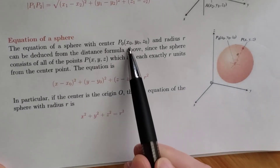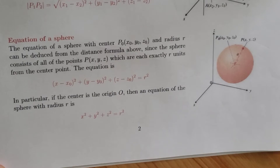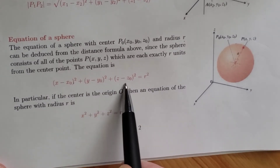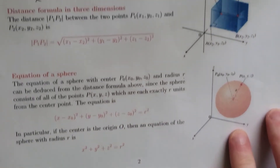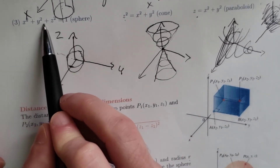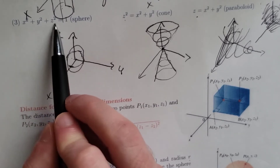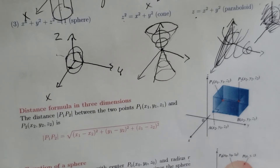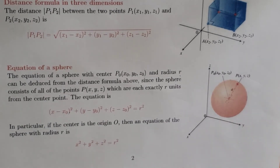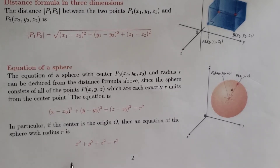If we have a point x-naught, y-naught, and z-naught as our center and a radius of r, then the formula is: x minus x-naught squared, plus y minus y-naught squared, plus z minus z-naught squared, equals r squared. So for x squared plus y squared plus z squared equals 1, we are centered at the origin and the radius is one. In particular, if the center is the origin, then x minus zero squared simplifies to x squared, and so on.